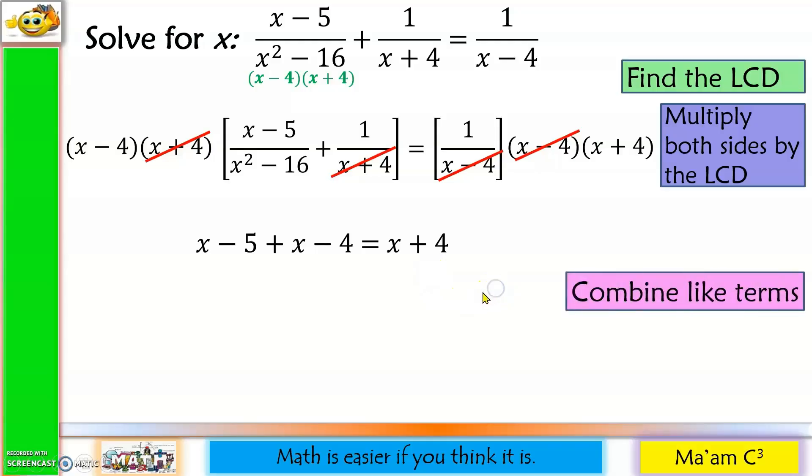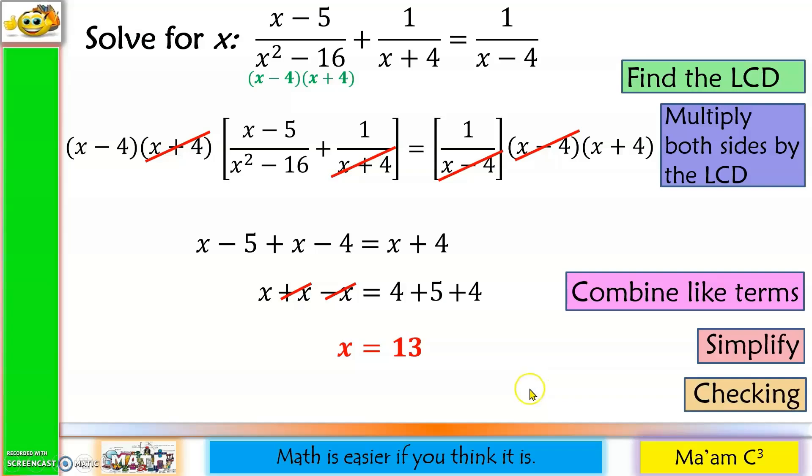Let us combine like terms. So we have x, positive x, x on the other side becomes negative x, equals, copy 4. Let's move negative 5, becomes positive 5. Let's move negative 4, becomes positive 4. So these are variables and these are constants. Next, we simplify. Positive x and negative x cancel. So we have x equals 4 plus 5, 9, 9 plus 4, 13. And finally, checking. I leave it up to you.